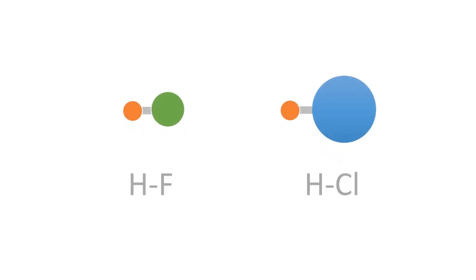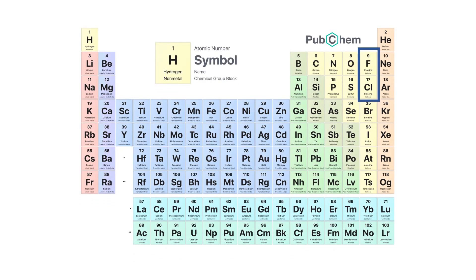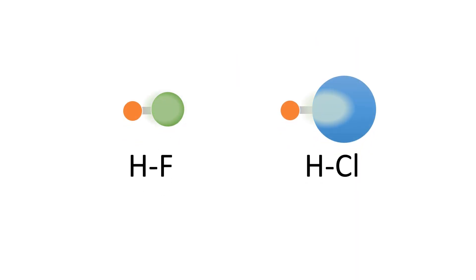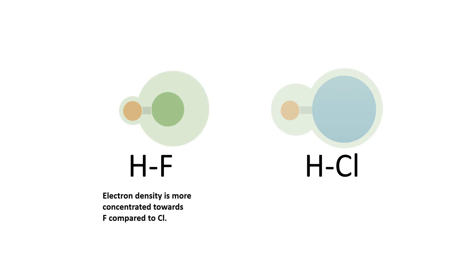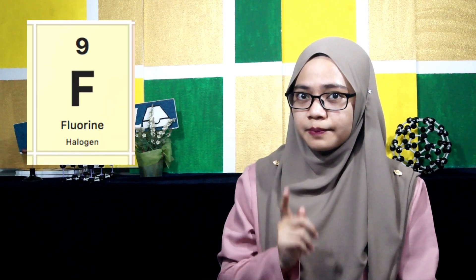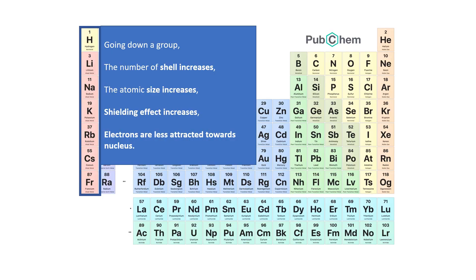Think of HF and HCl. Both fluorine and chlorine are in group 17, but fluorine has the bonding electrons closer to the nucleus compared to chlorine. In addition, the shielding effect in chlorine is greater than in fluorine. Remember that fluorine is the most electronegative atom. If the electrons are closer to the nucleus, the attraction will be greater. As you go down a group, electronegativity decreases because the bonding pair of electrons is far from the attraction of the nucleus. We can conclude that electronegativity decreases as we go down a group.